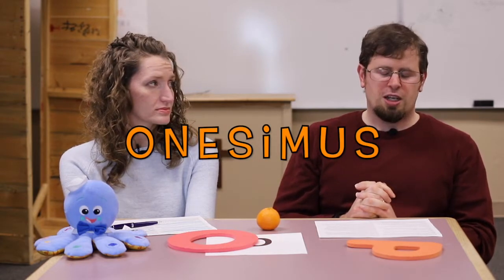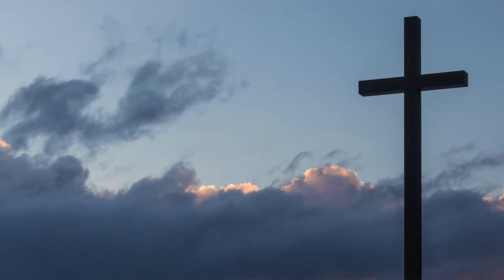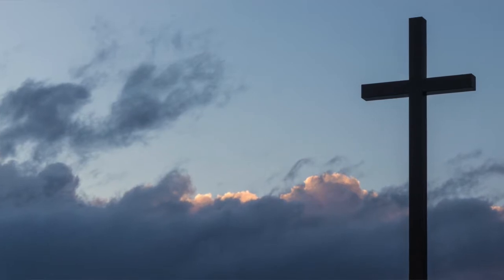Speaking of free, that reminds me of our Bible character for today. There was a man in the Bible named Onesimus and he was not free, at least not at first. Onesimus had been a slave that ran away from a man named Philemon. After Onesimus ran away, one day he heard Paul sharing the good news about Jesus. Can you tell the kids what happened next?